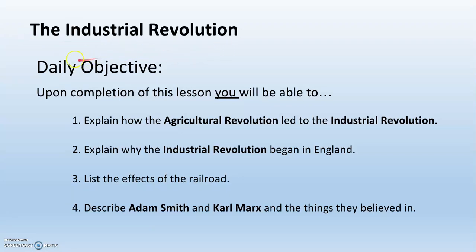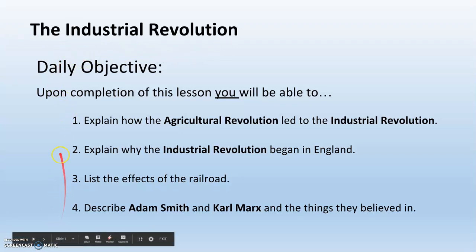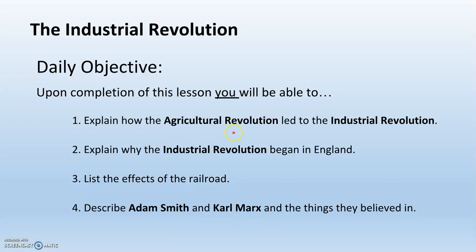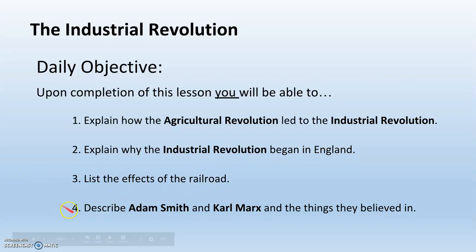Today we're going to learn about the Industrial Revolution. We have four daily objectives: number one, explain how the Agricultural Revolution led to the Industrial Revolution; number two, explain why the Industrial Revolution began in England; three, list the effects of the railroad; and four, describe Adam Smith and Karl Marx and the things they believed in.